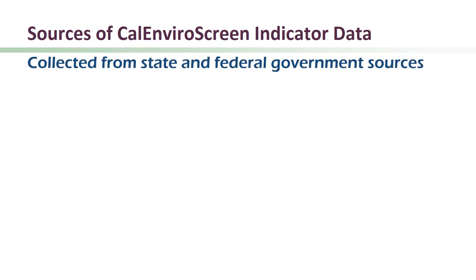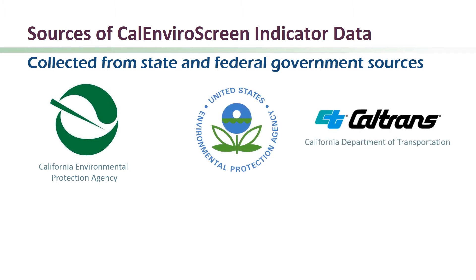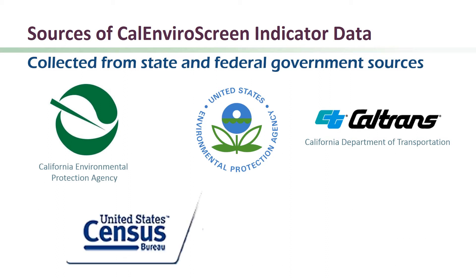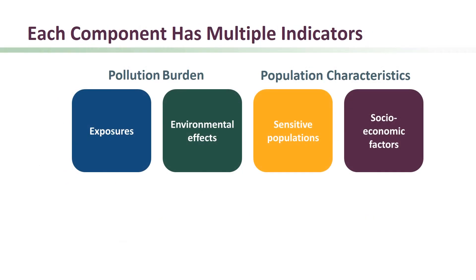CalEnviroScreen indicator data were collected from a variety of state and federal government sources. Many of the Pollution Burden Indicators data come from different boards and departments within the California Environmental Protection Agency. Some additional data come from the U.S. EPA and the California Department of Transportation. Data on population characteristics come from the U.S. Census Bureau and the California Department of Public Health. Each of the four CalEnviroScreen components is made up of multiple indicators. Let's go into greater detail about the 20 indicators in the 3.0 version of CalEnviroScreen.